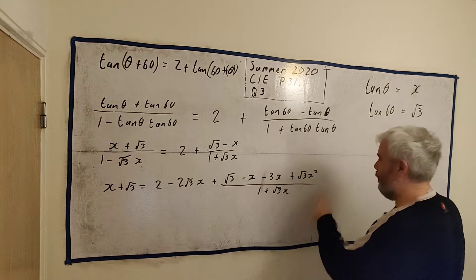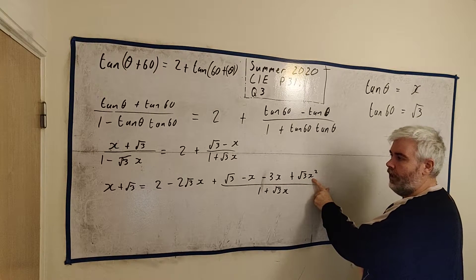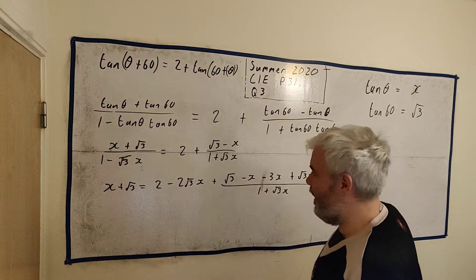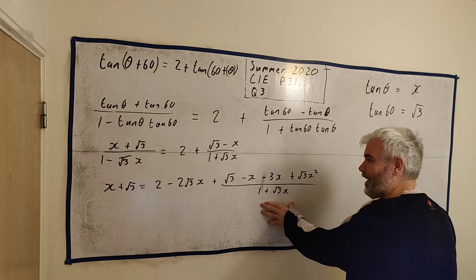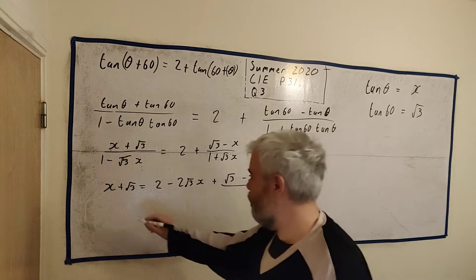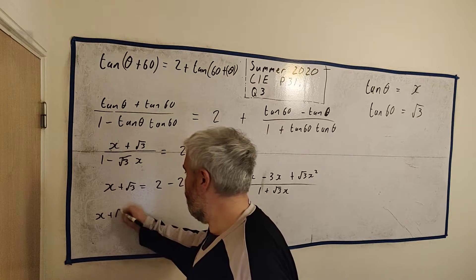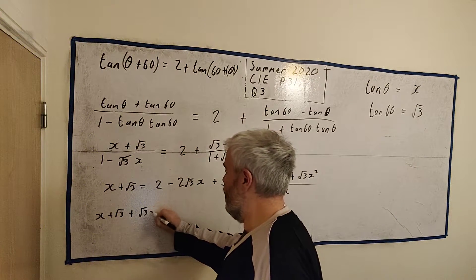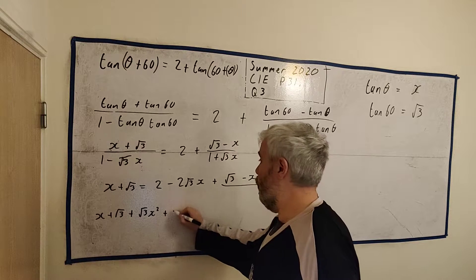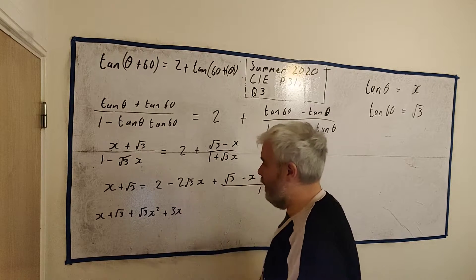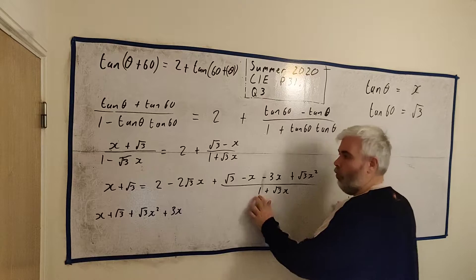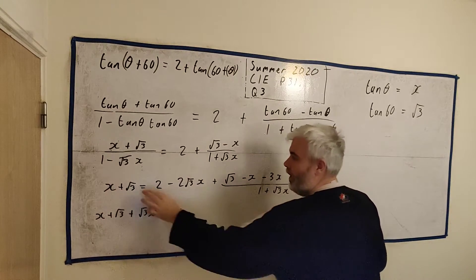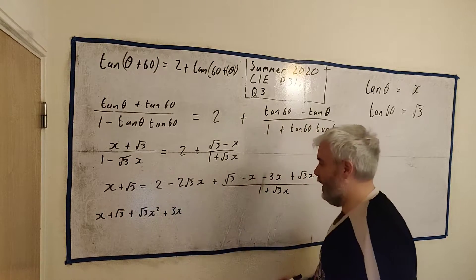So we're now starting to see a quadratic appearing. We have an X², it's looking good so far. Let's multiply everyone by this guy. This is a lot of trouble, but we're getting there. Multiply everyone by this, we will get X + √3 + √3X² + 3X. You're following along with everything. It's 1 times this, 1 times this, √3X times this, √3X by this. That's where all that came from.